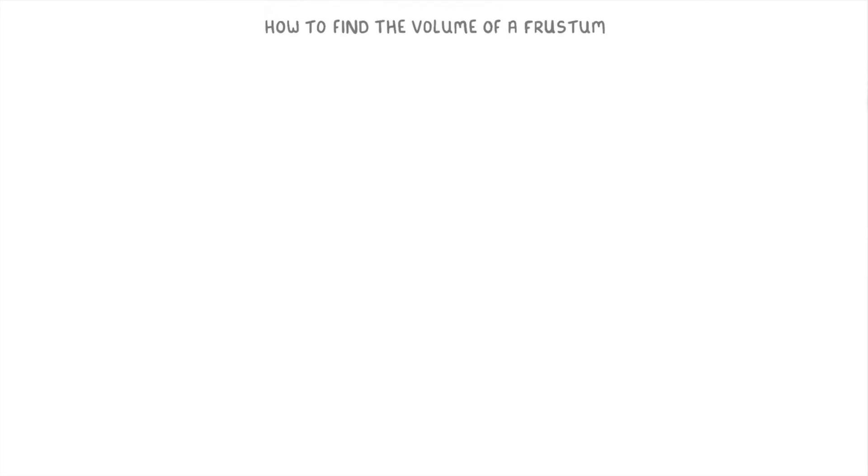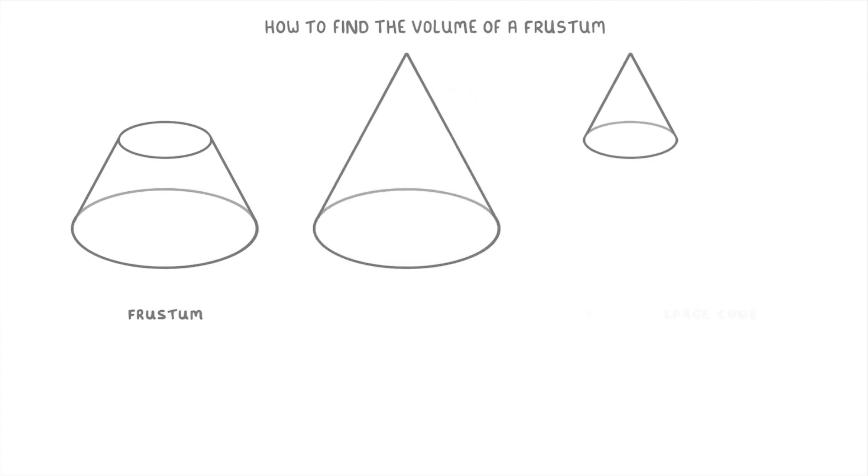In this video we're going to look at how to find the volume of a frustum, which is this odd-looking shape. The key to this is to think of the frustum as a cone that's had its top bit chopped off, so a frustum is basically just a large cone that's had a smaller cone at the top taken away from it.